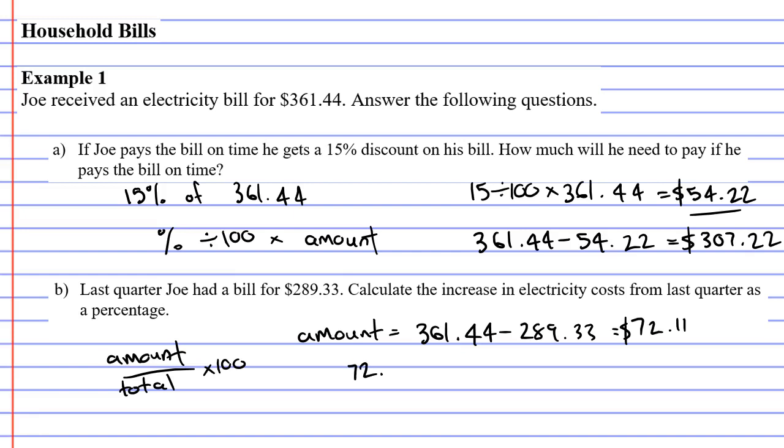Our amount goes at the top—the amount increased by—and our total at the bottom. Now a lot of people get confused with the total. Is it the total of the bill from last quarter or is it the total of the new bill?